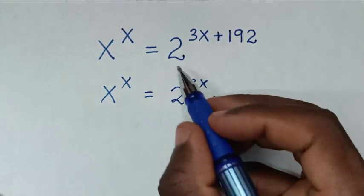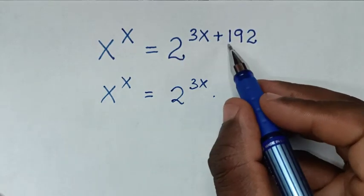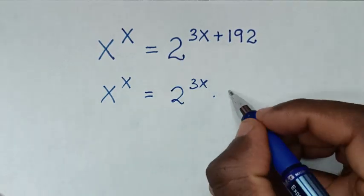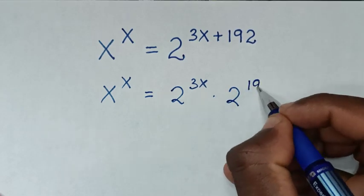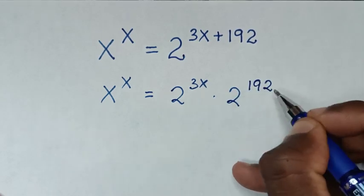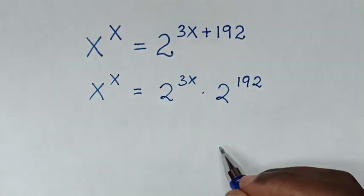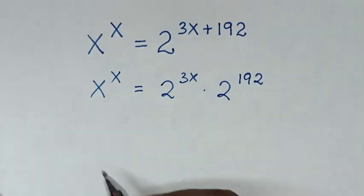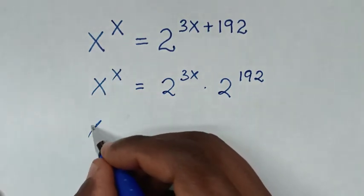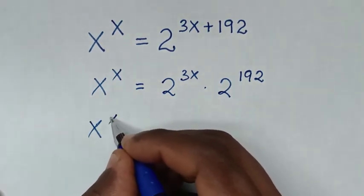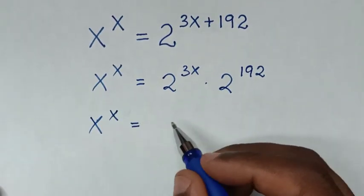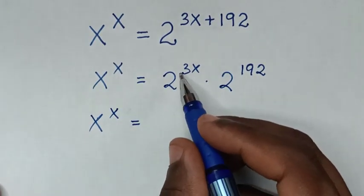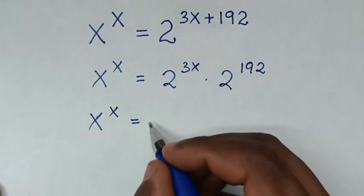Then times 2 power of 192. In the next step it will be x power of x is equal to 2 power of 3x.